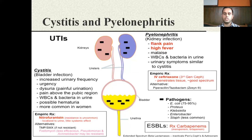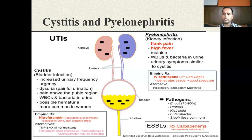Once culture and sensitivity data comes back, we step down to a narrow-spectrum antibiotic — the one showing sensitivity to the drug — and move ahead with definitive treatment. In case of cystitis, empiric treatment typically starts with nitrofurantoin, with alternatives being trimethoprim-sulfamethoxazole or phosphomycin. In pyelonephritis, empiric treatment starts with IV ceftriaxone, with alternatives such as piperacillin-tazobactam. For ESBL-positive organisms, carbapenem drugs like meropenem, ertapenem, or imipenem are used.